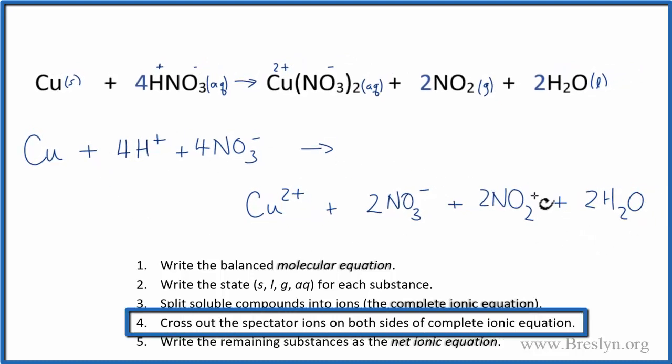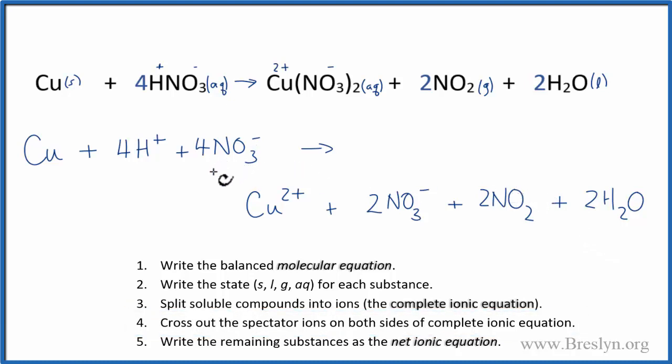At this point we can cross out what are called the spectator ions. These are ions that appear on both sides of the equation. So the only thing that appears on both sides, that's the nitrate ion. We have 4 of them here, and 2 of them here.